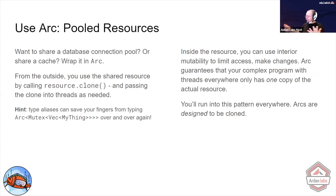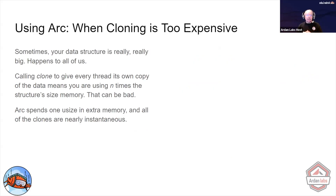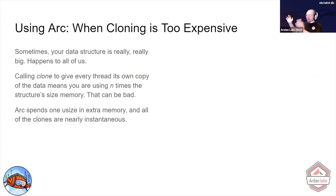ARC is for when ownership isn't clear, for pooled resources, and also when clone is expensive. If you have an enormous data structure that takes up several gigabytes of memory and you need to use it in several threads, it would really suck to clone that — you'd sit and wait while it fills your RAM over and over again. ARC is perfect for that because you can have one copy of it.